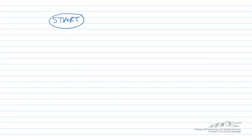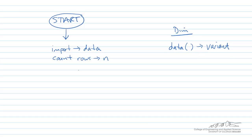I'm going to draw a flowchart for this. We start. The first thing we're going to do is import the data — I'm going to define a data array that's going to be an n by 2. The first column is going to be the x values, and the second column is going to be the y values. I'm also going to keep track of the things that we need to dim over here. We're going to dim that as a variant. Next, we're going to count rows and store that in a variable n, which is going to be an integer.